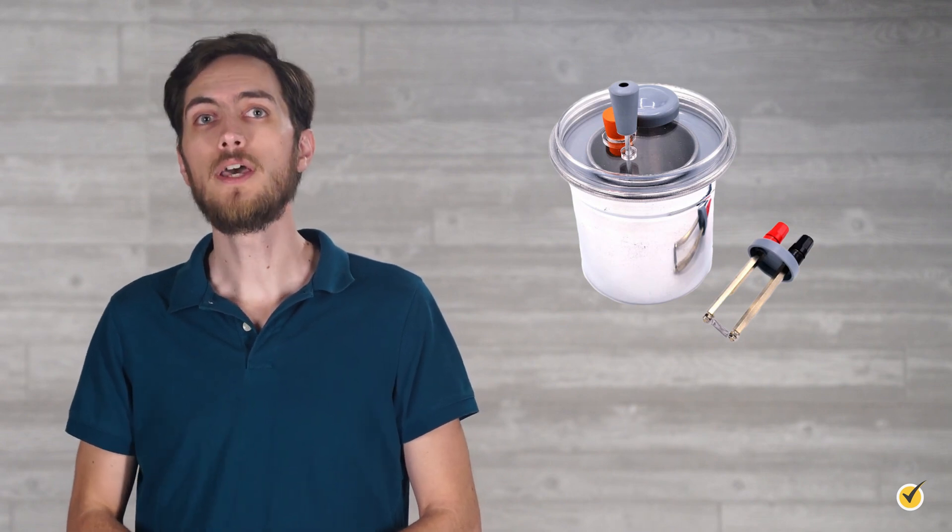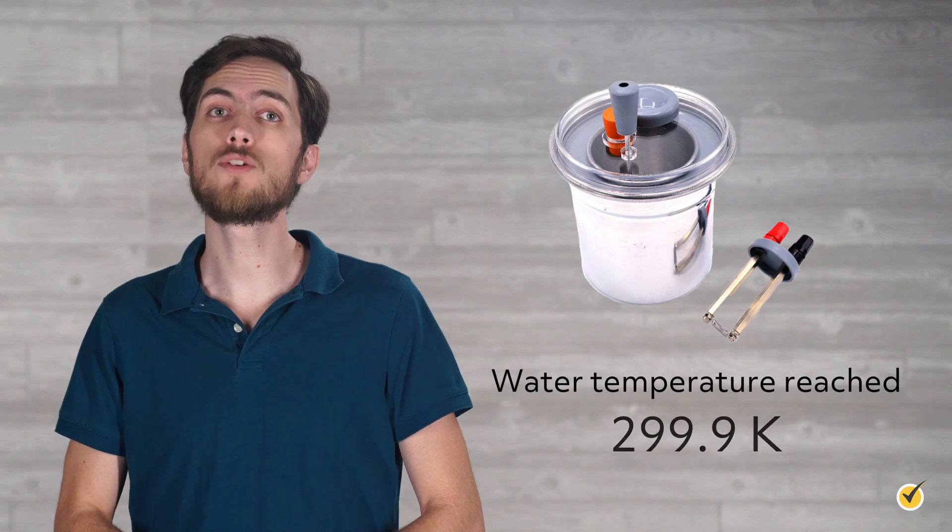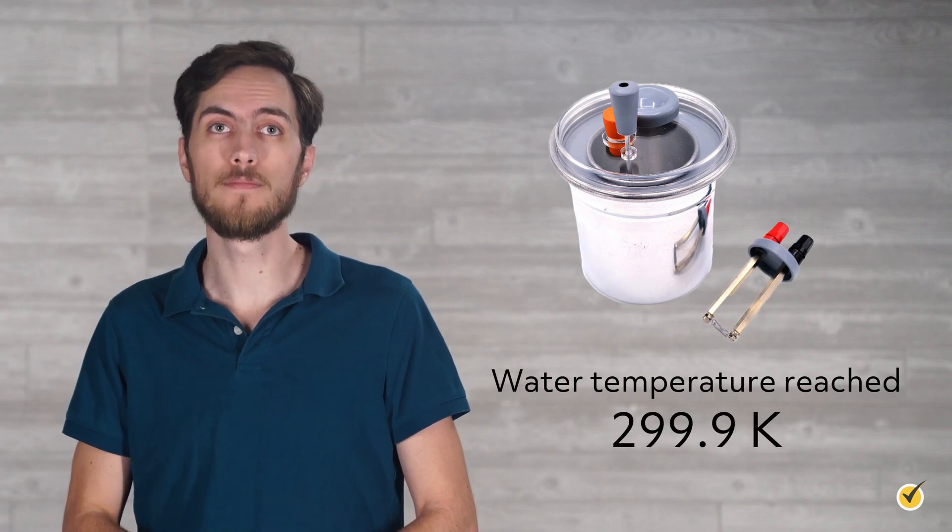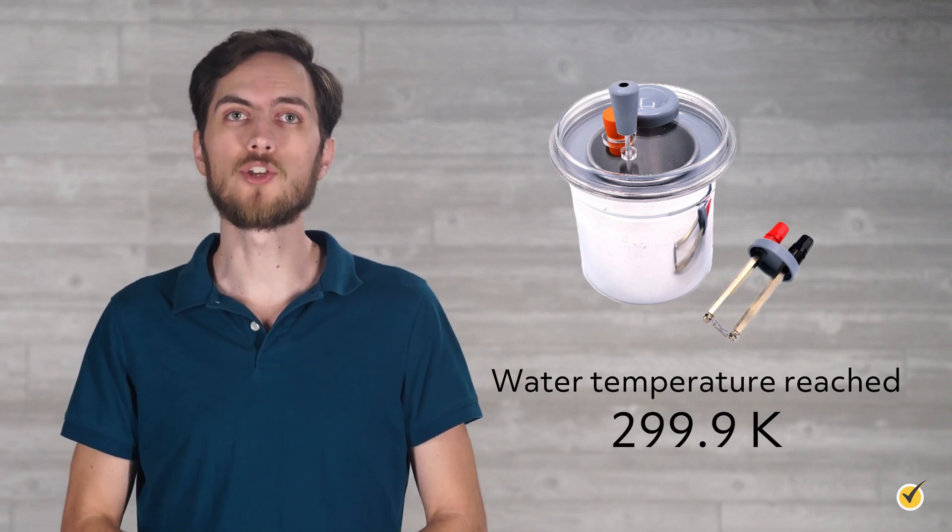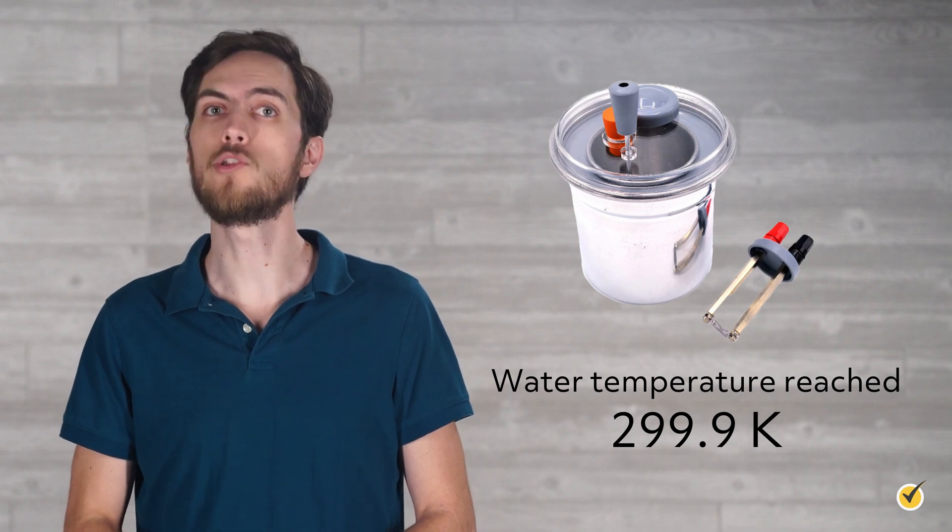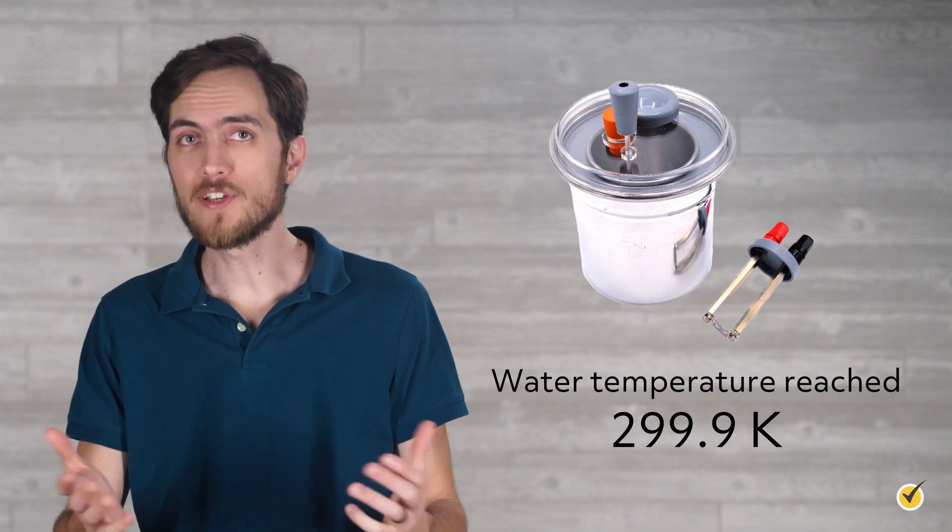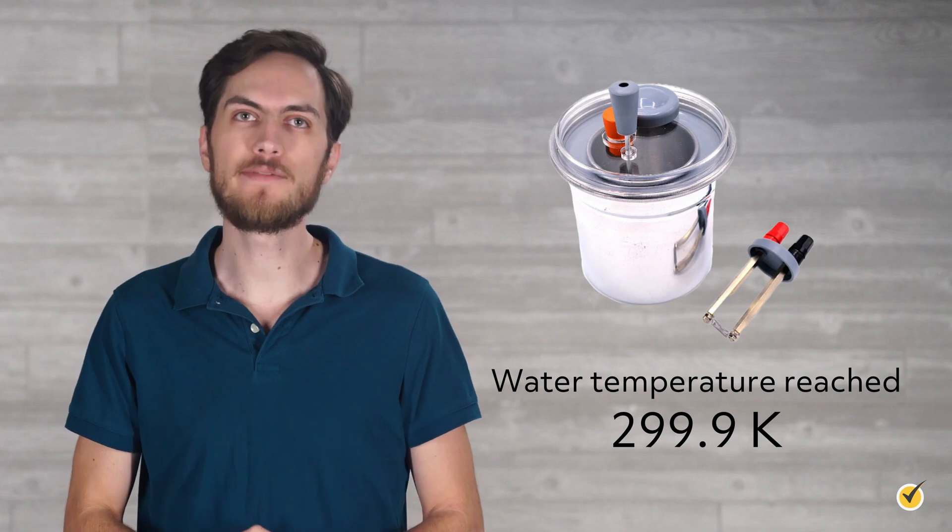With the exact same experimental setup, we find that with our new calorimeter, the temperature of the water reached 299.9 Kelvin. So now, let's see how that adjusts our calculation of the specific heat capacity for aluminum. Since this is just like the previous calculation, pause the video and give it a try yourself.